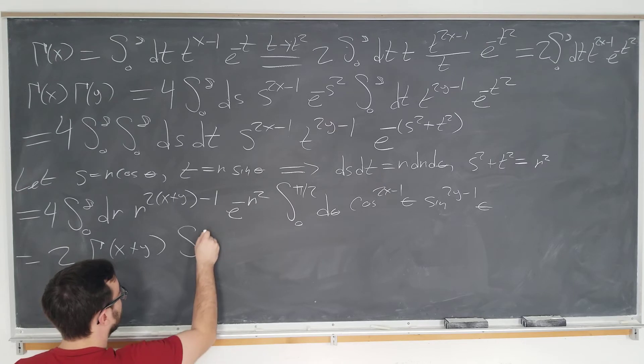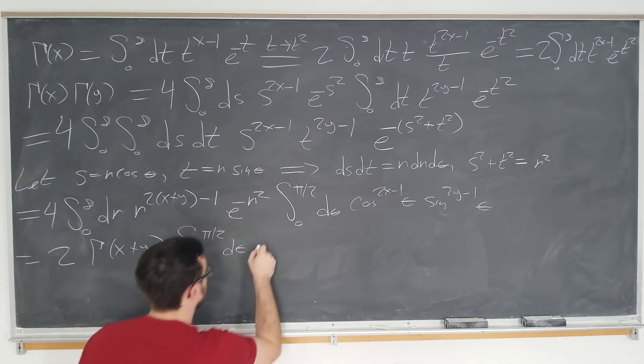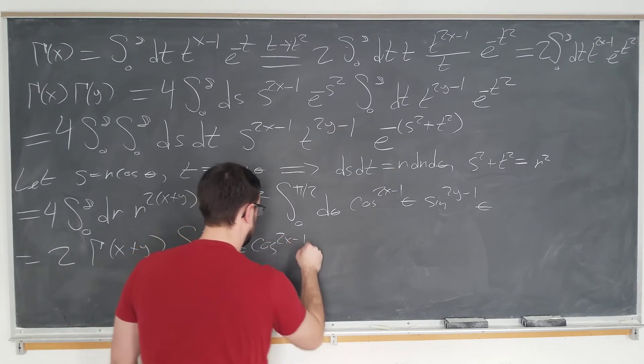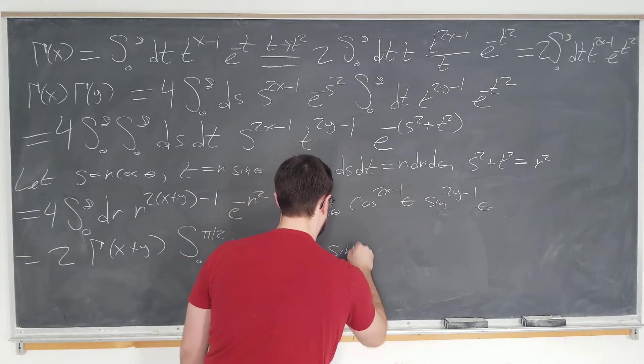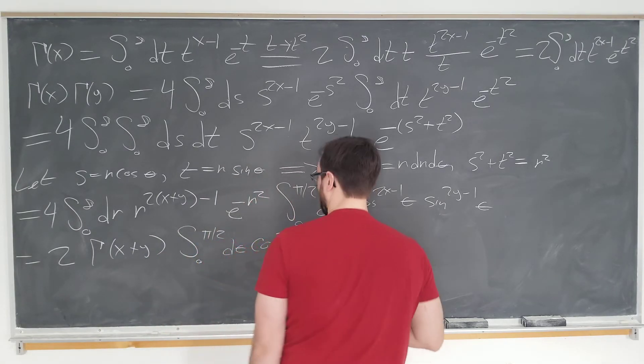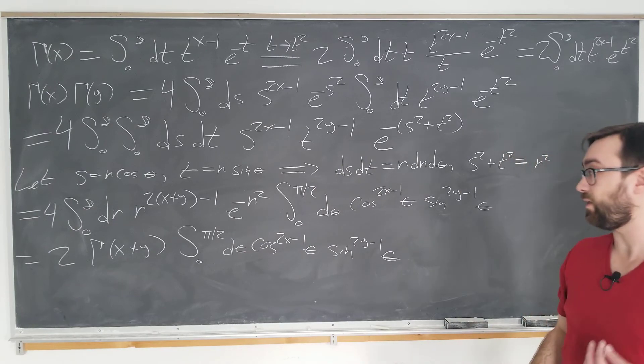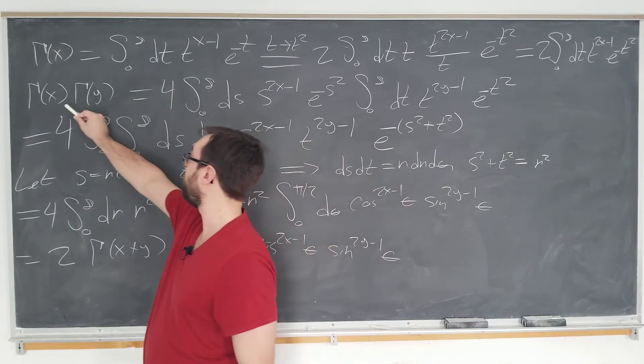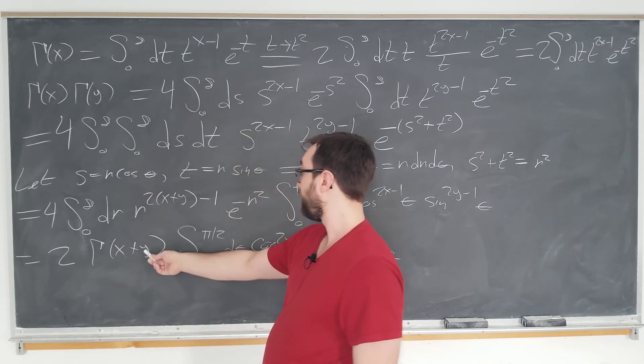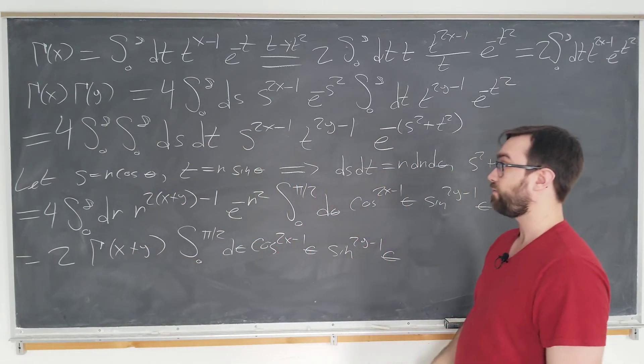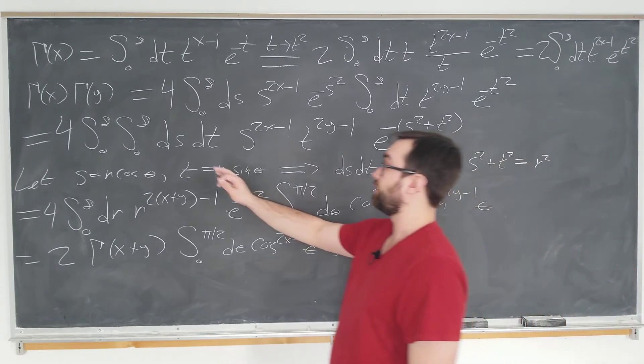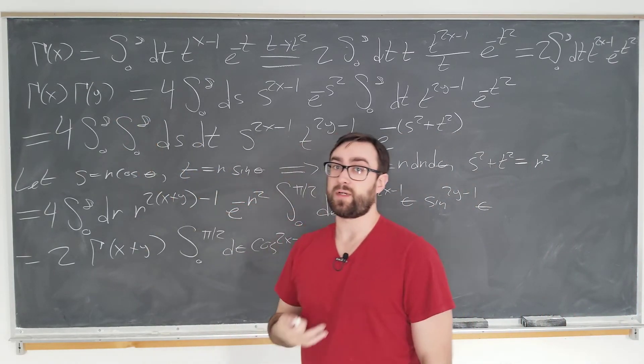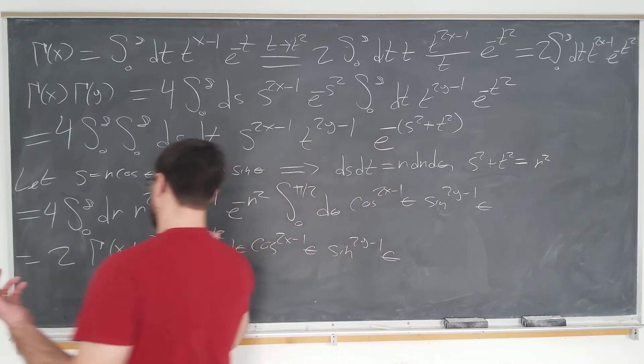Okay, so now this is two gamma of x plus y. Now, we have the same integral as before. Okay, fantastic. How does this tell us about the beta function? Well, we have gamma of x times gamma of y here. And we have gamma of x plus y here. So, the beta function is defined as gamma of x times gamma of y over gamma of x plus y, which is exactly what we have here.